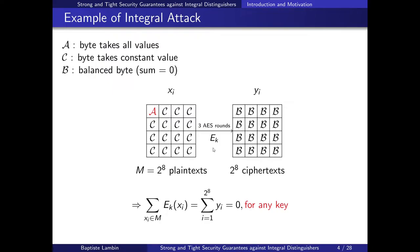We encrypt this set of 2^8 plaintexts with three rounds of AES, resulting in 2^8 ciphertexts. Something we can observe is that if we take the XOR sum of all the ciphertexts, then whatever the value of the key used in the three-round AES, this sum will be zero — each byte sums to zero. This is not a behavior we would expect from a random permutation, so this is a distinguisher: it distinguishes a block cipher from an ideal block cipher.